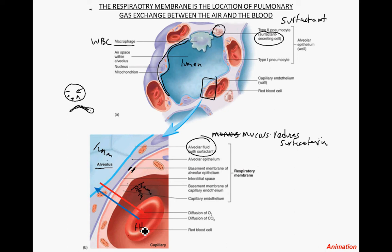This is the pathway that oxygen must take. It diffuses first into the mucus layer, then passively diffuses across the epithelial cell, across the basement membrane, across the basement membrane of the capillary, through the very thin endothelial layer, and finally into the plasma, where it is picked up by the hemoglobin inside the red blood cell.